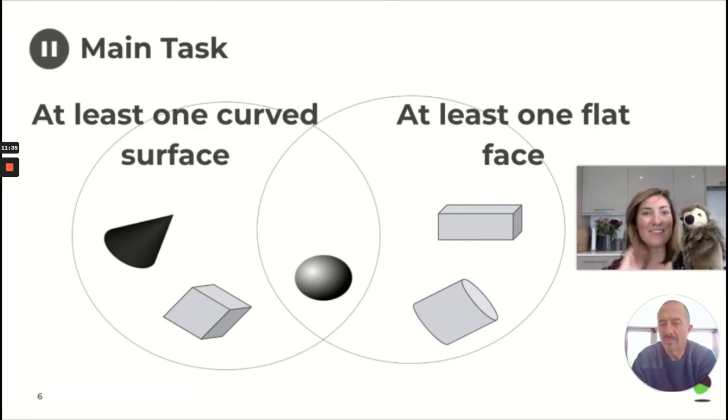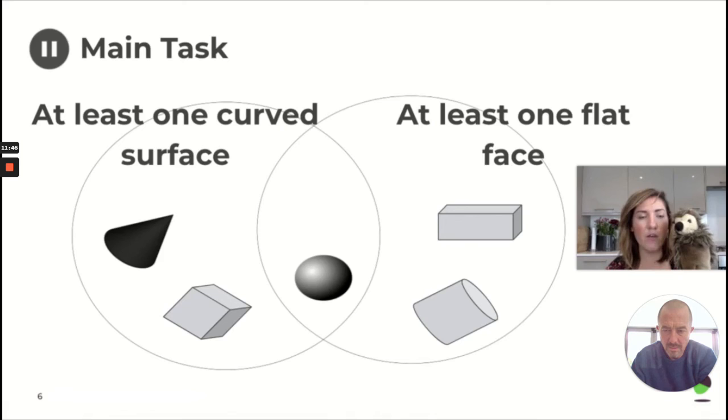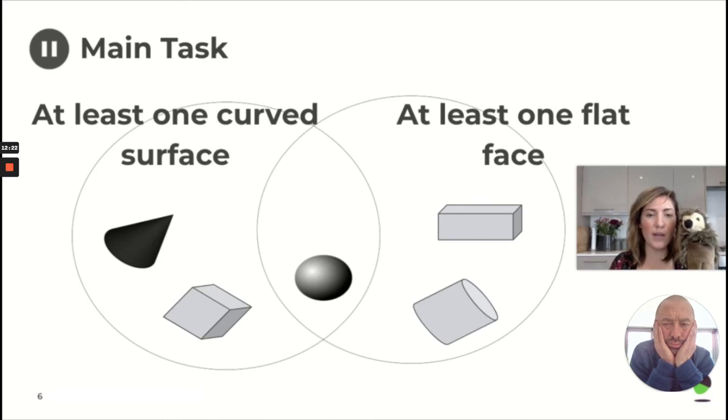Okay, it's time to get a bit tricky in our main task, everyone. We've got a spot the mistake. So Harold has been sorting some 3D shapes. He's sorted them in this diagram from shapes that have at least one curved surface and shapes that have at least one flat face. So the ones that have at least one flat face will go in this side. So the ones that have at least one flat face are going to go on the right side. The shapes that have at least one curved surface are going to go on the left side. Now, there's also a shape in the middle. Do you see that the two circles they join up? That means it's been sorted that that shape has both a flat face and a curved surface.